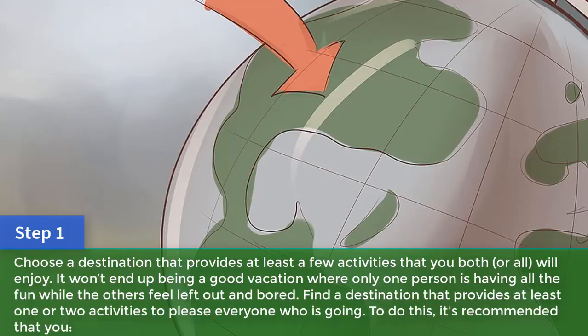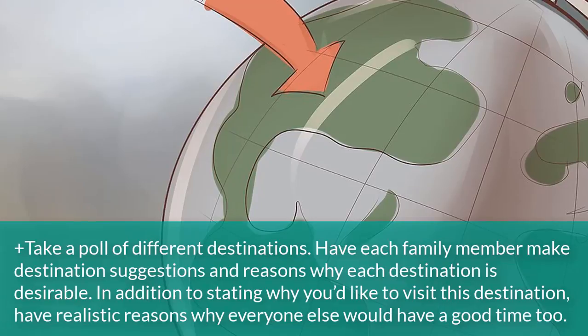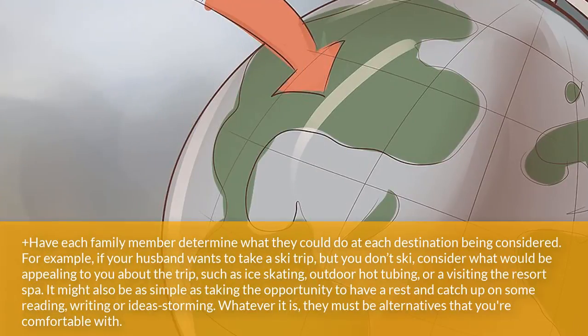To do this, it's recommended that you take a poll of different destinations. Have each family member make destination suggestions and reasons why each destination is desirable. In addition to stating why you'd like to visit, have realistic reasons why everyone else would have a good time too. Have each family member determine what they could do at each destination being considered. For example, if your husband wants to take a ski trip but you don't ski, consider what would be appealing to you, such as ice skating, outdoor hot tubing, or visiting the resort spa. It might also be as simple as taking the opportunity to rest and catch up on some reading, writing, or ideas storming. Whatever it is, they must be alternatives that you're comfortable with.